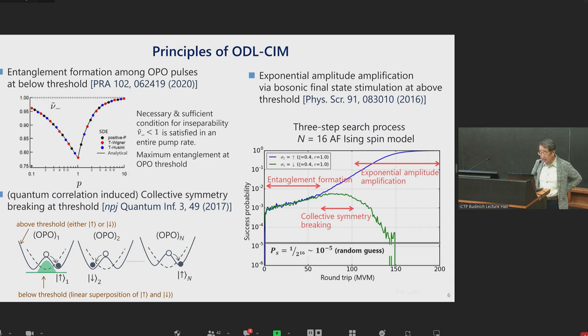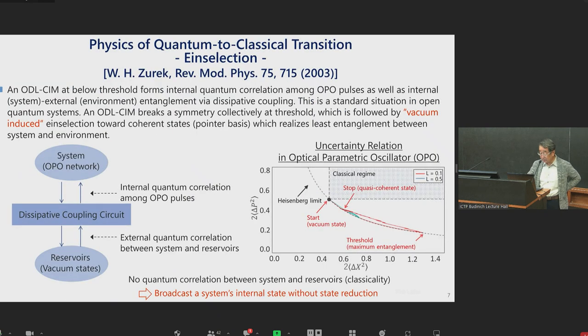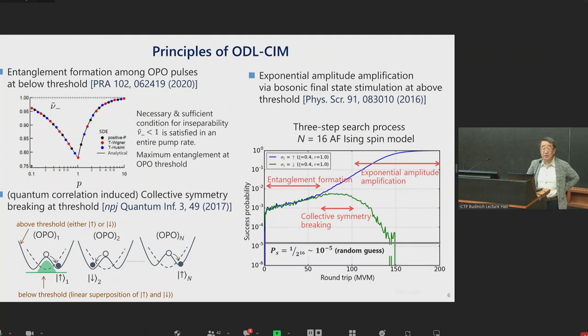Right bottom panel shows the success probability for n equals 16 antiferromagnetically coupled Ising spin model. For this case, the success probability of random guess is about 10 to the minus five. Immediately after a few round trips of OPO pulses, success probability is increased by two orders of magnitude. This enhancement of the success probability originates from the formation of internal entanglement. Then at the threshold region, collective symmetry breaking sets in, and one of the two degenerated ground states is selected, and its amplitude is exponentially increased, and the unselected ground state amplitude is exponentially suppressed. This exponential amplification and deamplification is actually the last step of CIM search process.